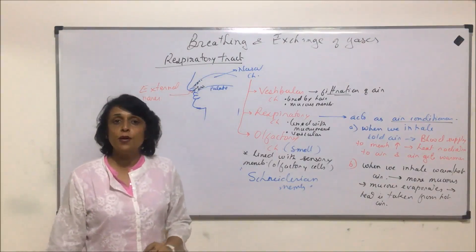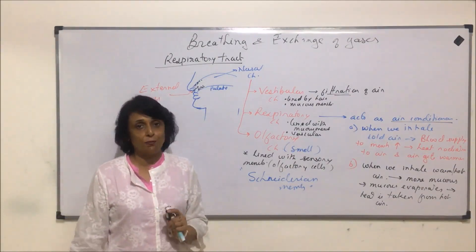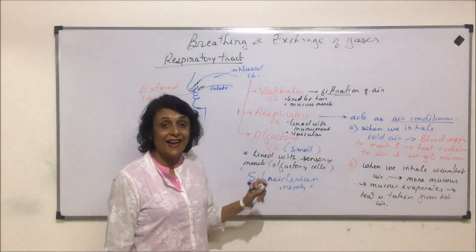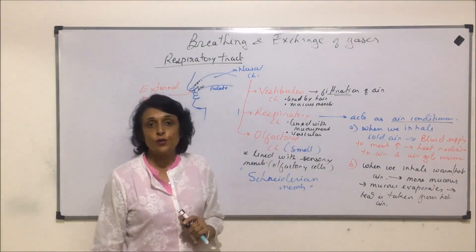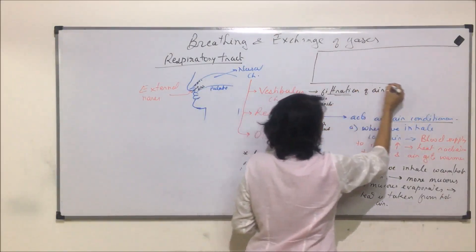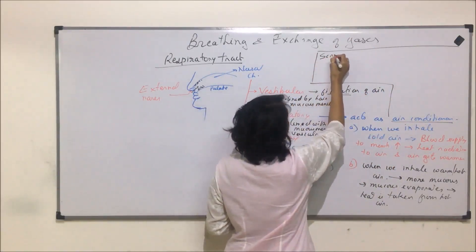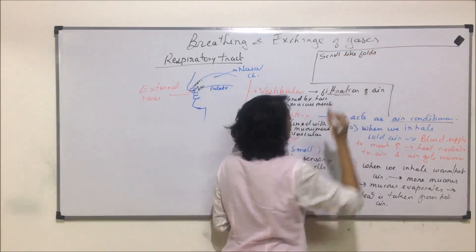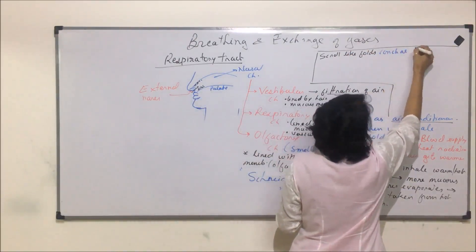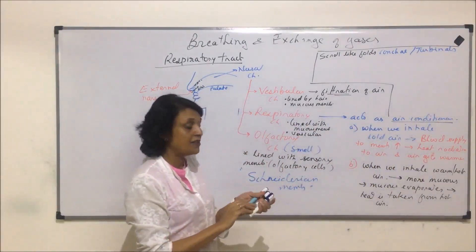Inside the nasal chamber we also find certain folds known as conchae or turbinals. Each nasal chamber has three membranous folds, and these are known as conchae or turbinals. These are scroll-like folds present inside the nasal chamber.